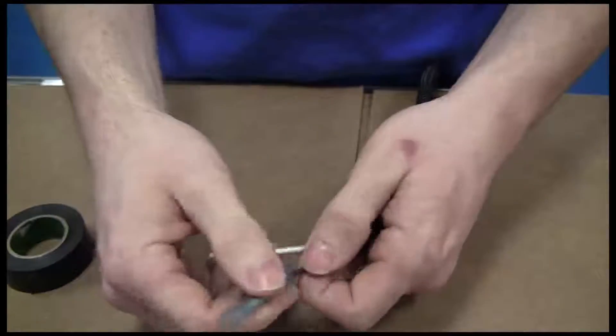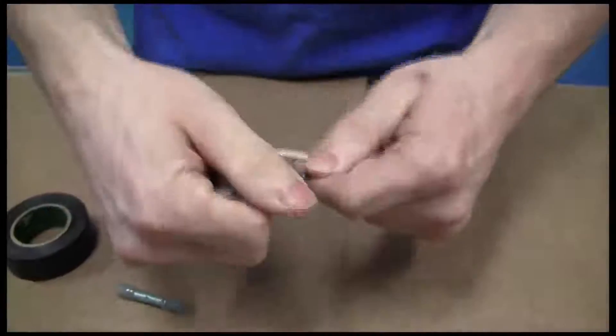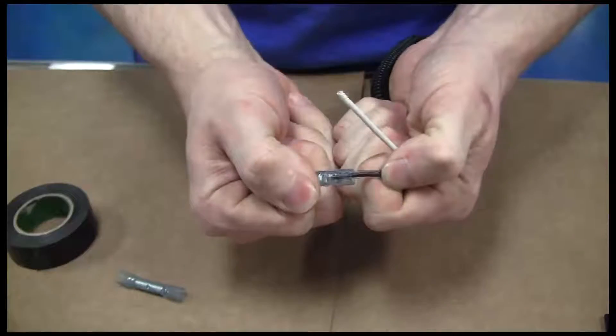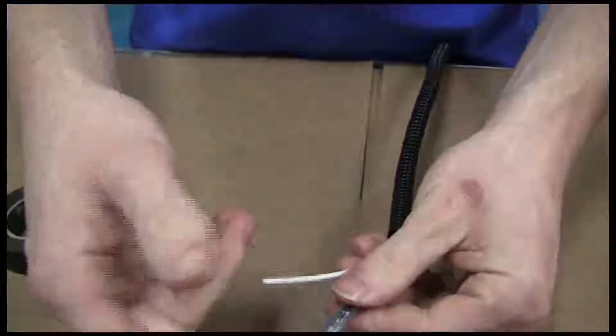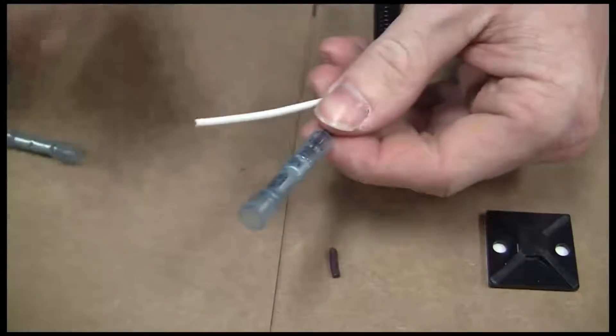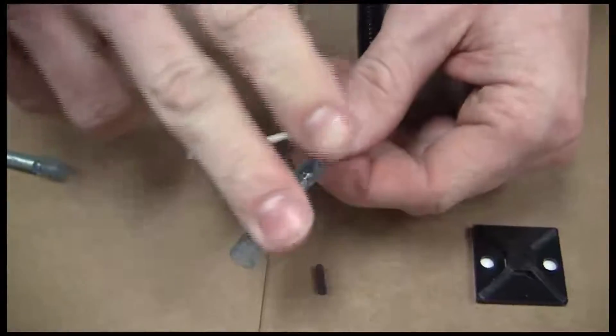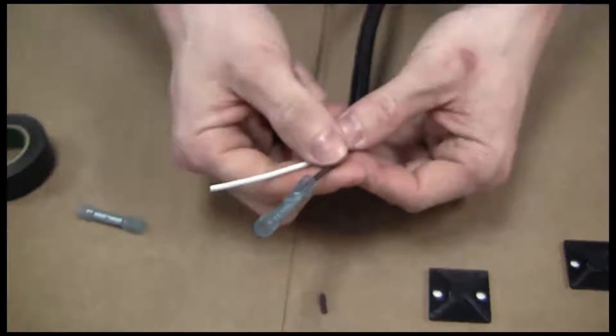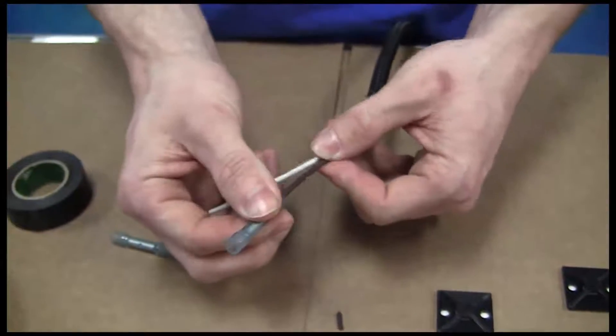All right, now you've got a good solid connection. This wire, you don't have to worry about pulling on this wire. You can pull on it pretty hard, it's not going to come out. Then also, when you get your other wire in here, these actually shrink around the wire. You take your lighter or a heat gun and apply it to the connector, and it will shrink around the wire, making for a good solid connection.